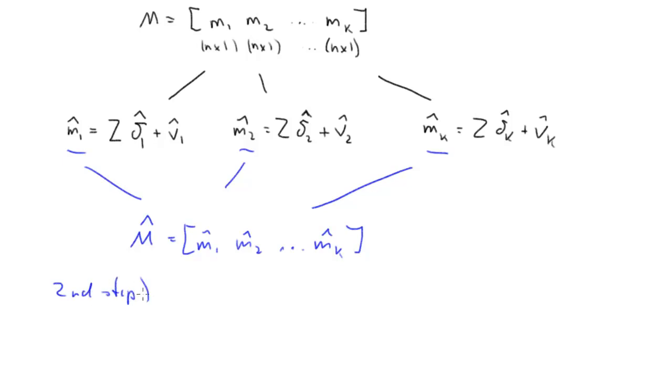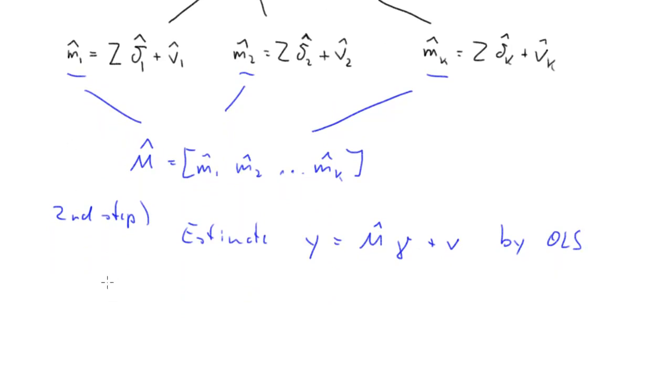Then we need to say what the second step is. After all, it's called two-stage least squares. What we then do is basically estimate the following model: Y equals M hat times gamma plus V by OLS. That will, if we do this quite mechanically, give us gamma hat. We should give it 2SLS for two-stage least squares. OLS applied to this equation means instead of M, we use M hat. Otherwise, everything else looks like OLS. This is now our two-stage least squares estimator for gamma.